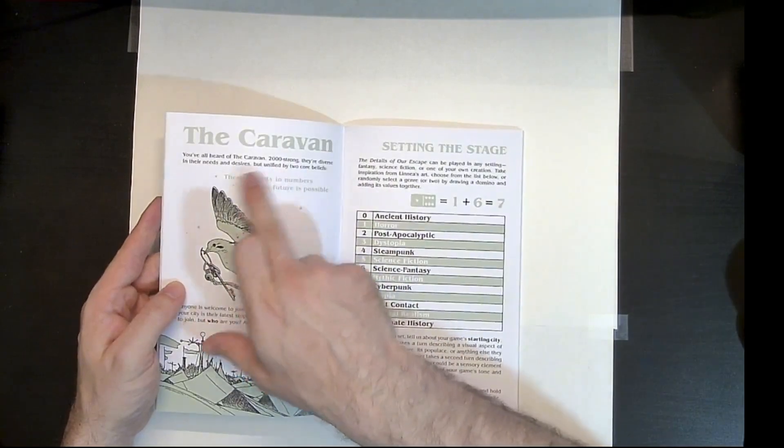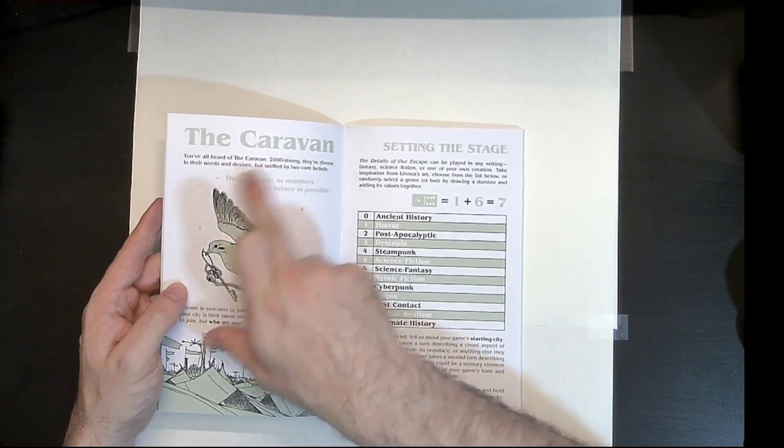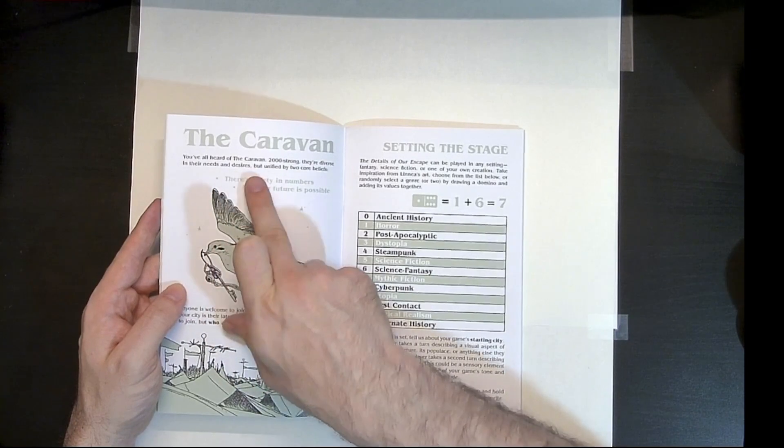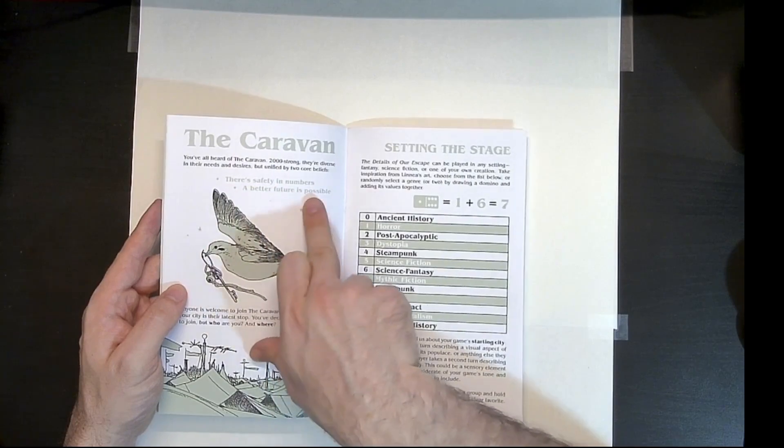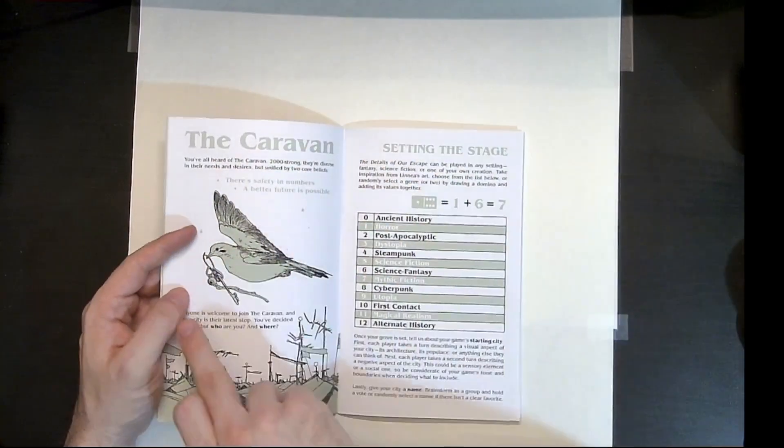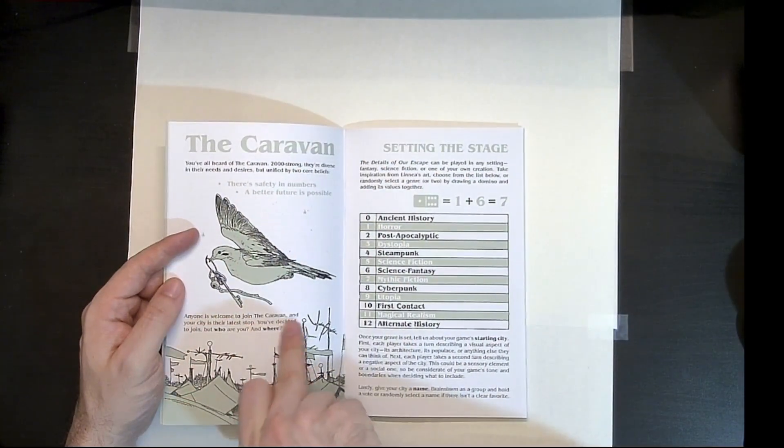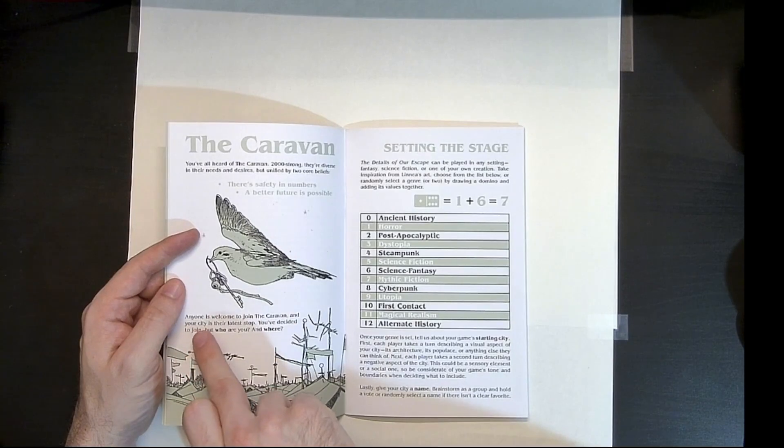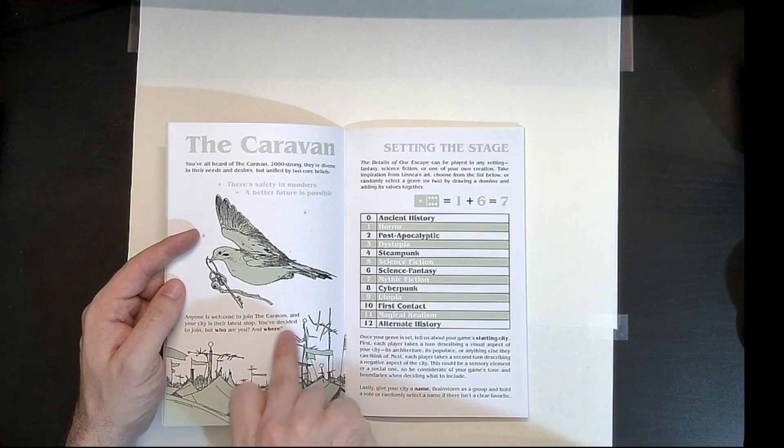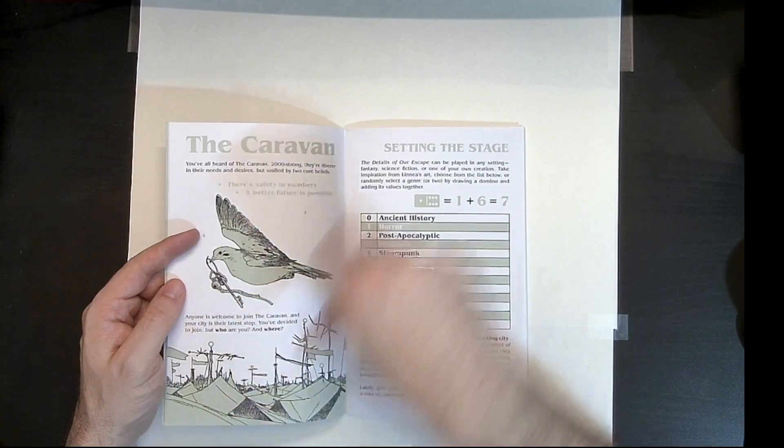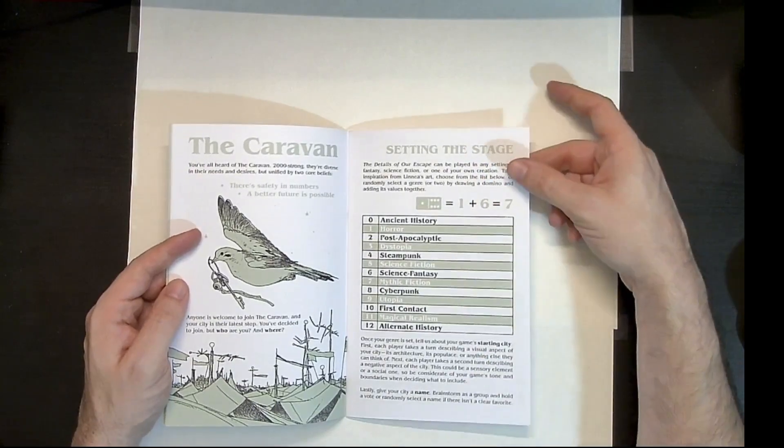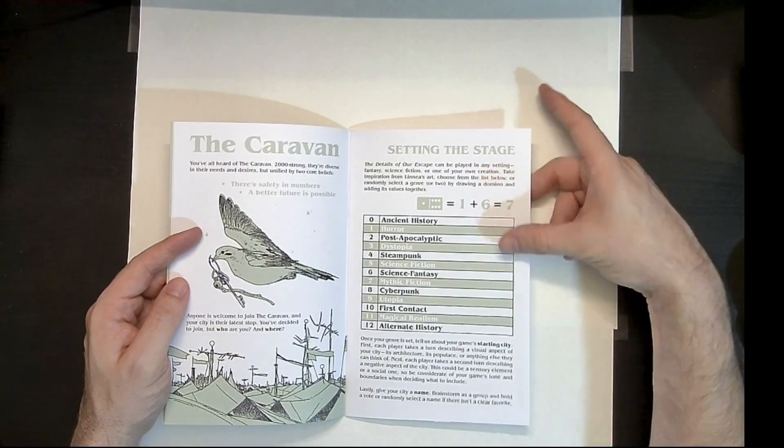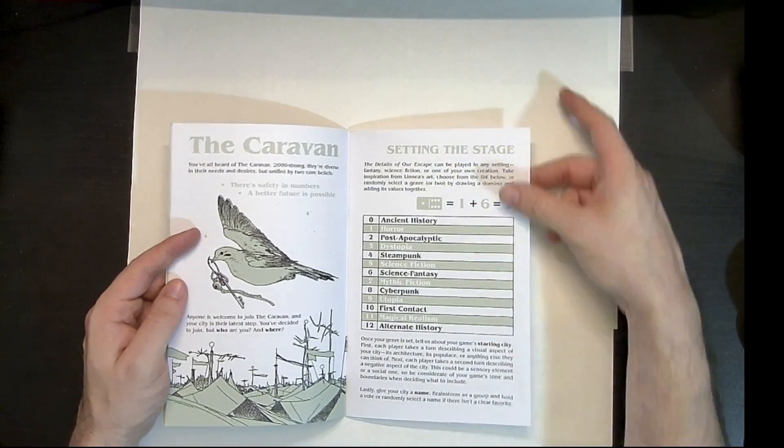And of course here we're starting to describe the caravan. Right. So here it says we've all heard of the caravan, 2,000 strong. They're diverse in their needs and desires, but unified in two core beliefs. One, there is safety in numbers and two, a better future is possible. So it says here, anyone is welcome to join the caravan and your city is their latest stop. You've decided to join them, but who are you and where? So again, we start describing, you know, using, you can, here's your rules dominoes to describe the starting city.